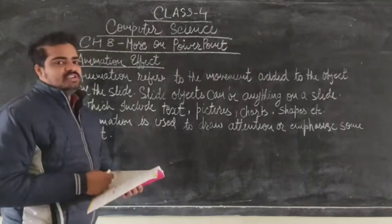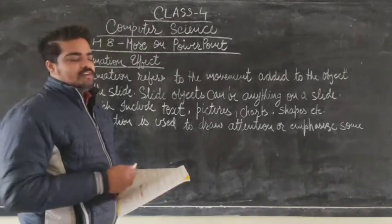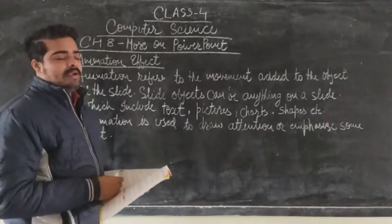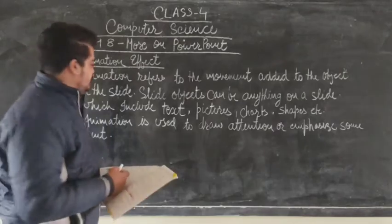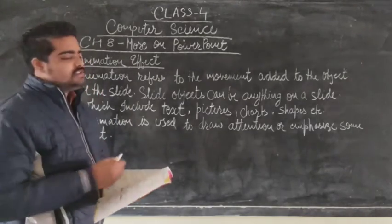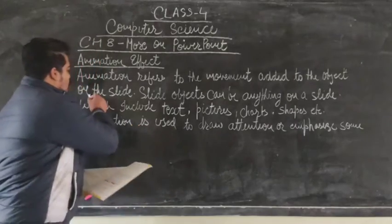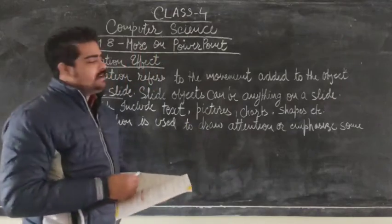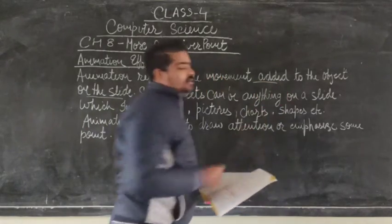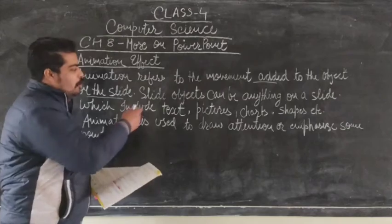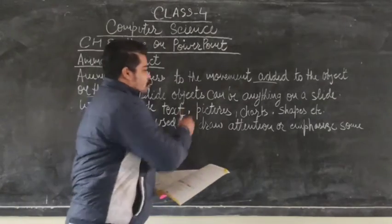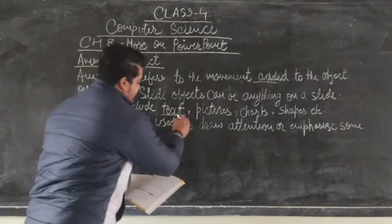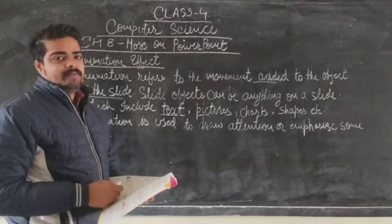The first topic is animation effect. Animation refers to the movement added to an object on the slide. Slide objects can be animated — slide objects can be anything on a slide, which includes text, pictures, charts, shapes, etc.